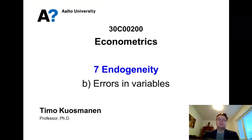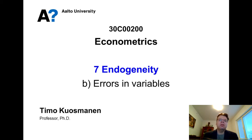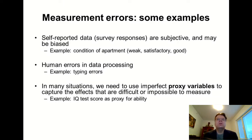Errors in variables is another commonly cited source of the endogeneity problem. For the sake of clarity, I will discuss two types of cases: one where the errors are placed in the dependent variable Y, and another case where errors occur in the explanatory variable X. But first, let's consider a couple of examples of why there might be measurement errors in our data to get some practical feeling.